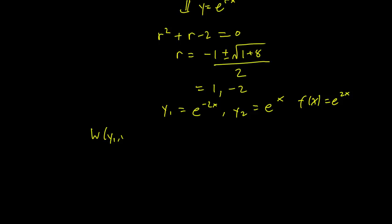The Wronskian of y1 and y2 is just going to be the determinant of this matrix. So we have y1 is e^(-2x), y2 is e^x. The derivative of y1 is -2e^(-2x). The derivative of y2 is e^x. And this is just going to be e^(-2x) times e^x minus e^x times -2e^(-2x). So our Wronskian is just going to be 3e^(-x).